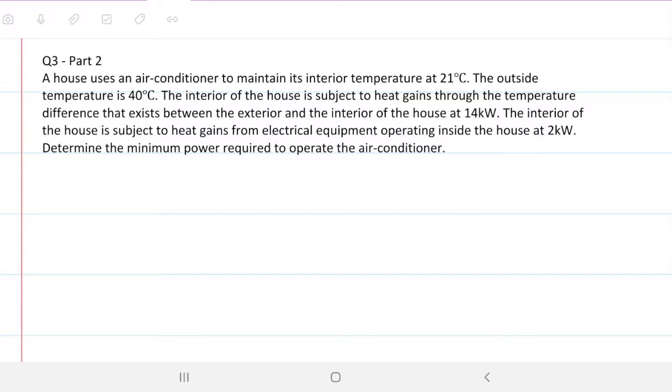It reads like so. A house uses an air conditioner to maintain its interior temperature at 21 degrees Celsius. The outside temperature is 40 degrees Celsius. The interior of the house is subject to heat gains through the temperature difference that exists between the exterior and the interior of the house at 14 kilowatts. The interior of the house is subject to heat gains from electrical equipment operating inside the house at 2 kilowatts. Determine the minimum power required to operate the air conditioner.